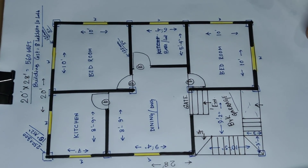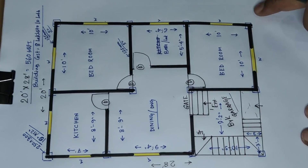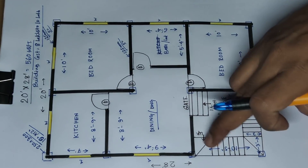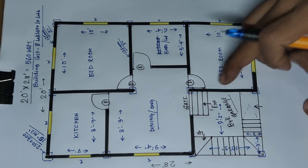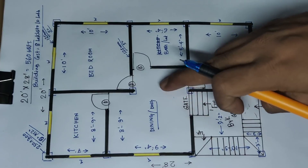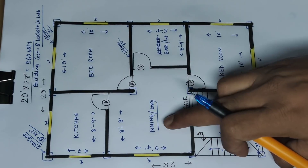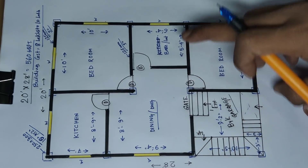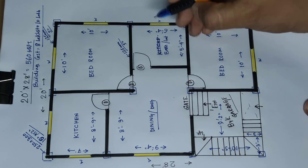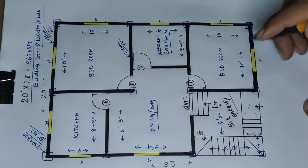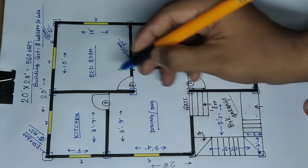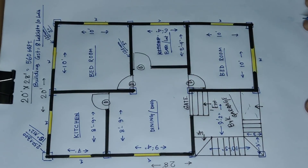This is a 2 BHK house plan. Stair area and garage and main gate entry, dining and drawing, bath and WC, bedroom, bedroom, kitchen. Thank you for watching this video.